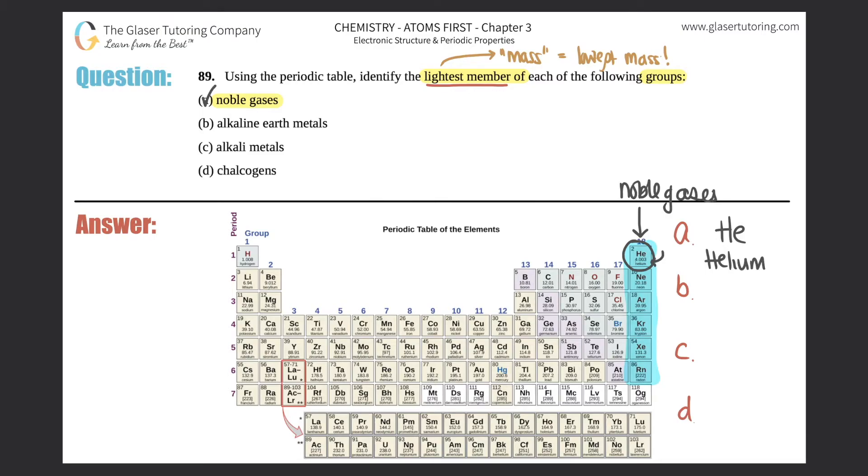B: Your alkaline earth metals. Where are these? Alkaline earth metals are Group 2. All of them are classified as alkaline earth metals. Which one is the lightest? It's definitely the one on the top, so beryllium would be the lightest alkaline earth metal.